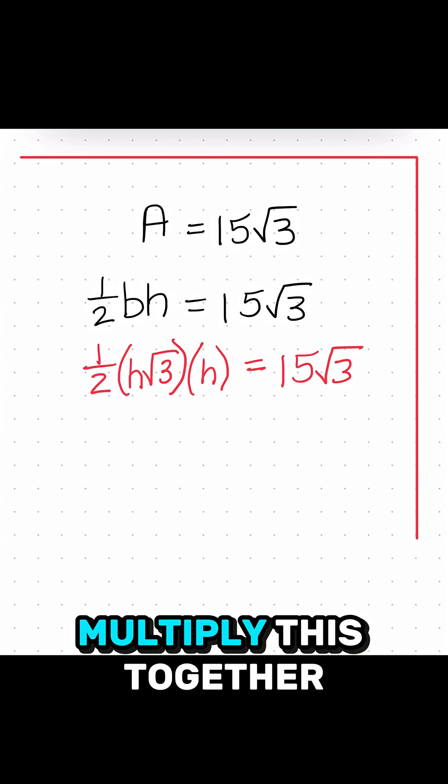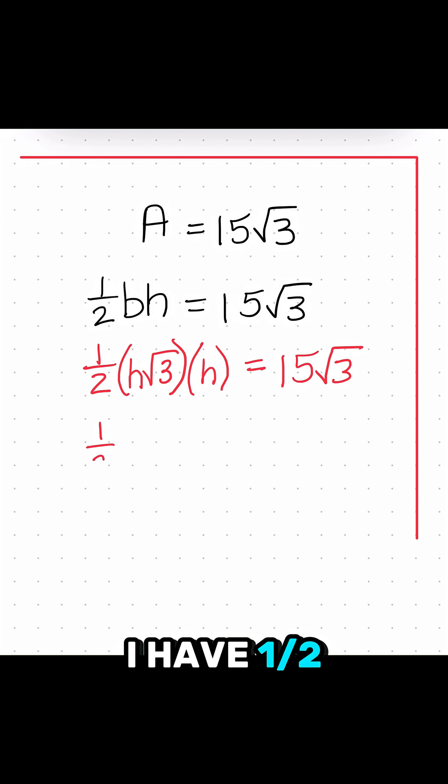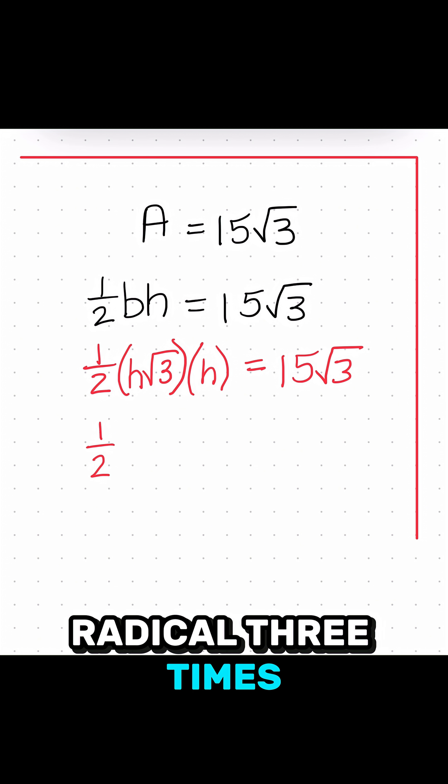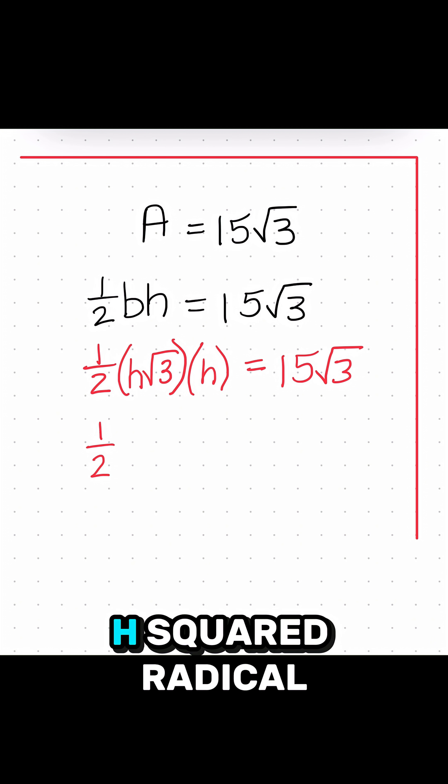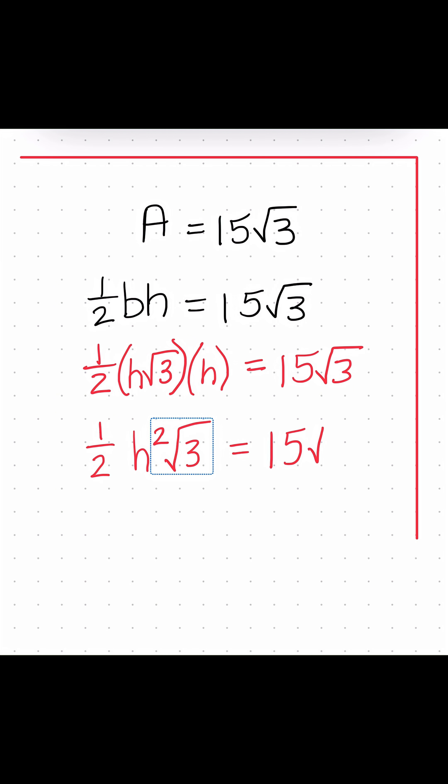I'm just going to go ahead and multiply this together. I have a half. What is h radical 3 times h? That's going to be h squared radical 3. And that's going to equal 15 radical 3.